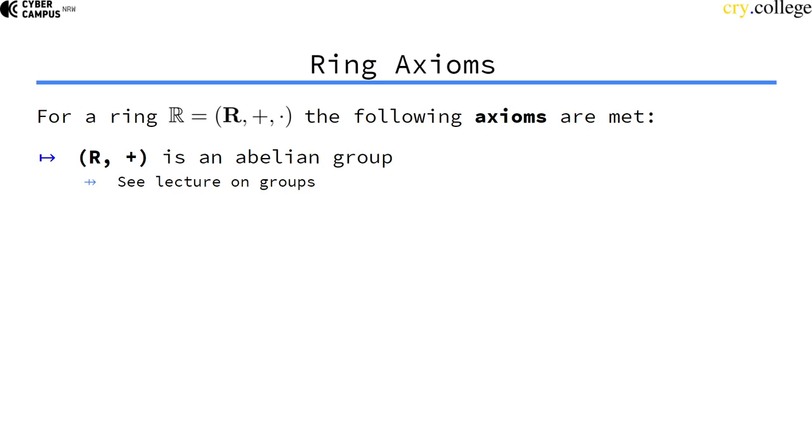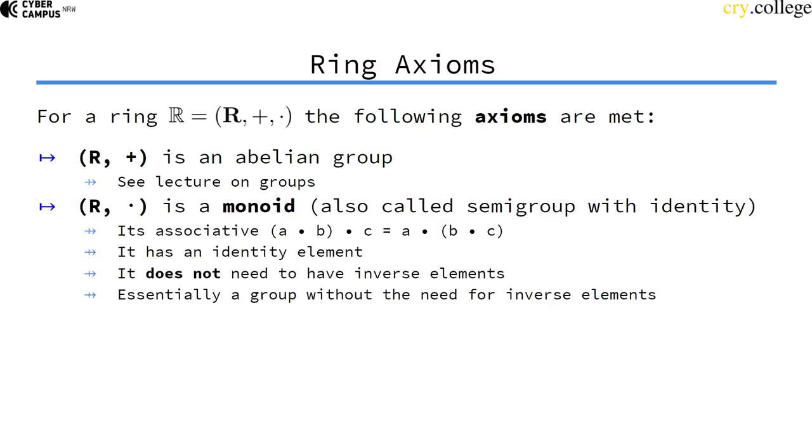The set with the plus operation is an abelian group. The set with the multiplication is a monoid, sometimes called a semi group with identity. That means it's associative and has an identity element, but not every element needs to have an inverse. A monoid is essentially the same as a group but without the restriction that every element needs an inverse.